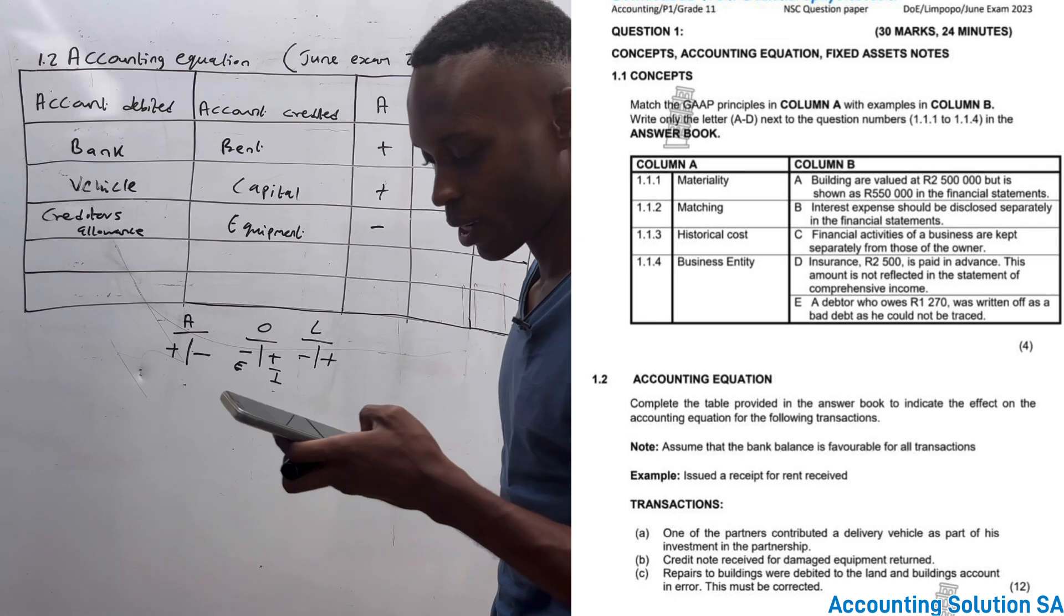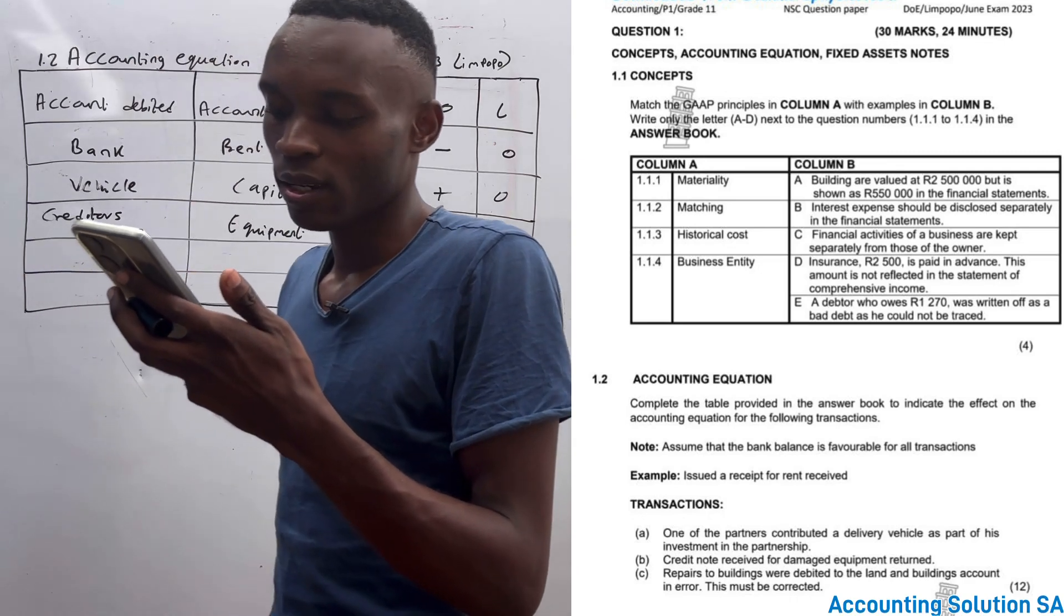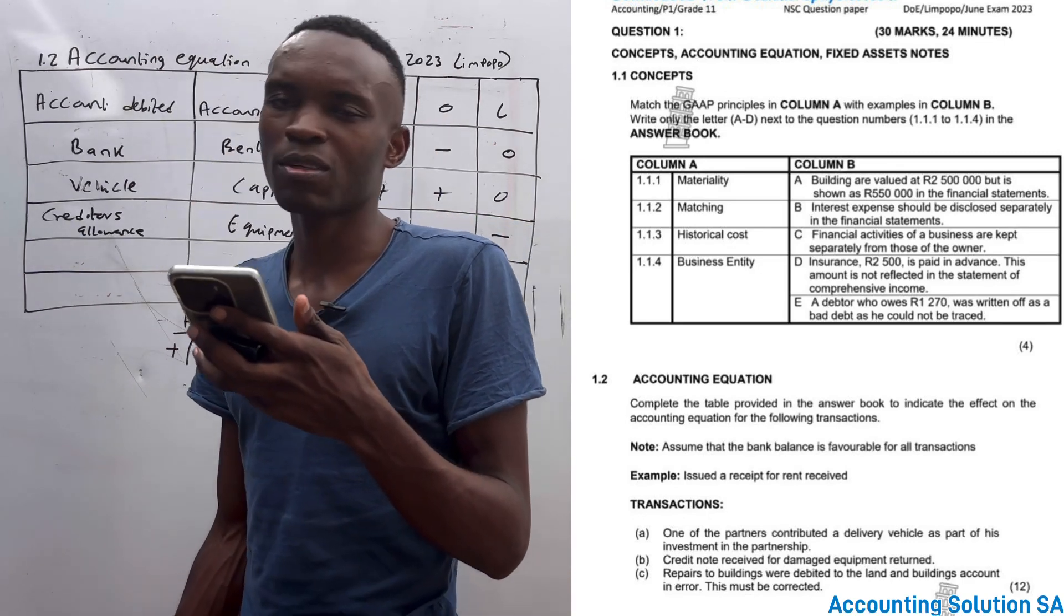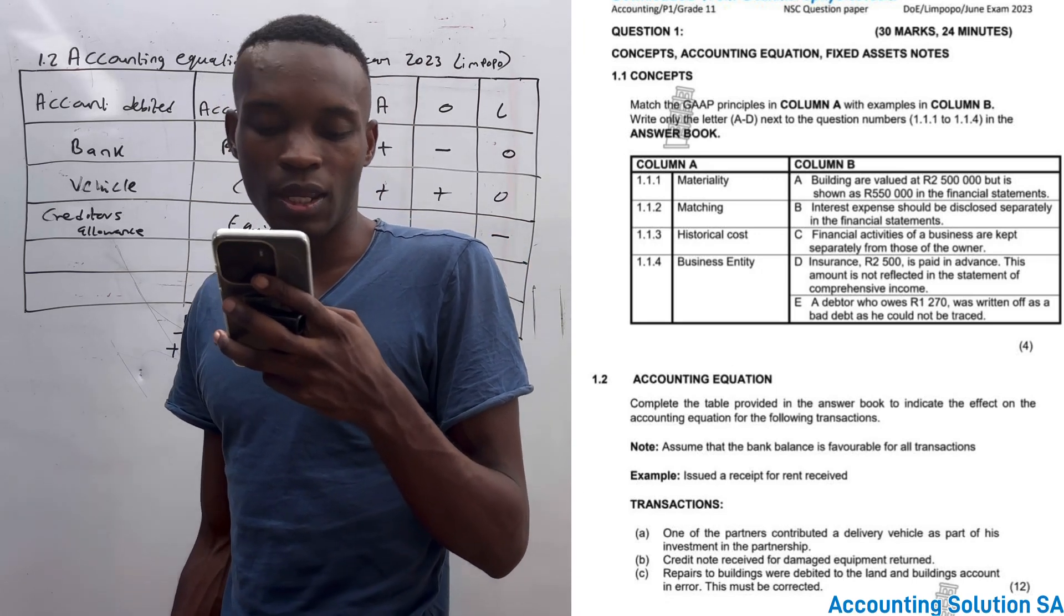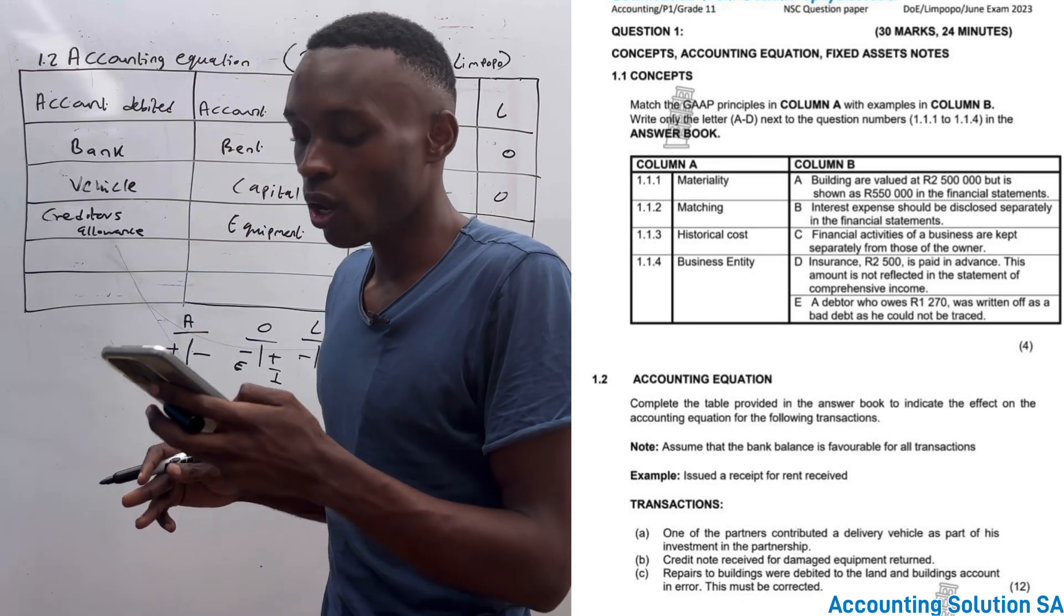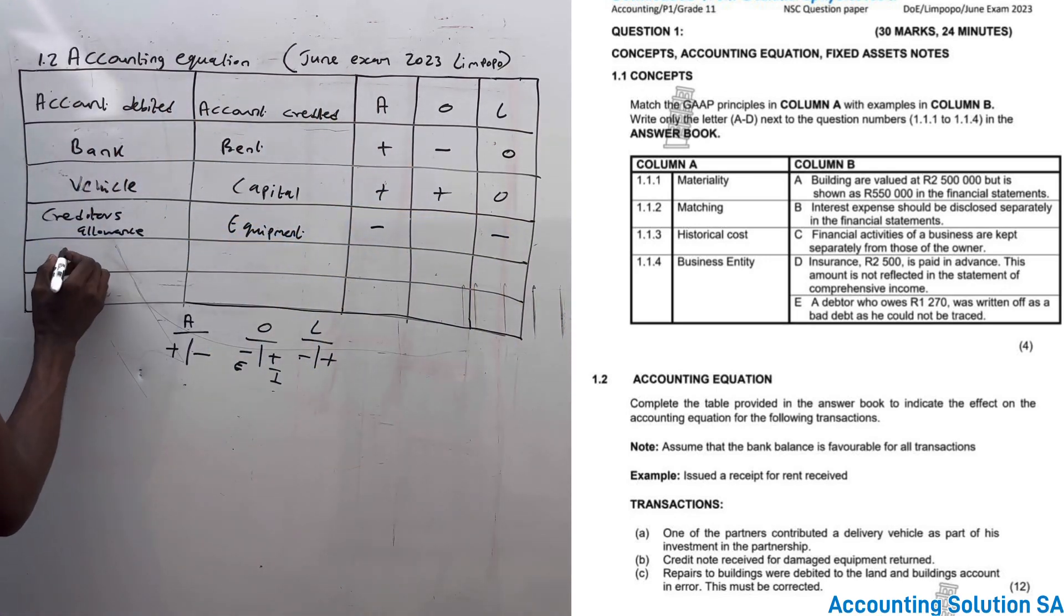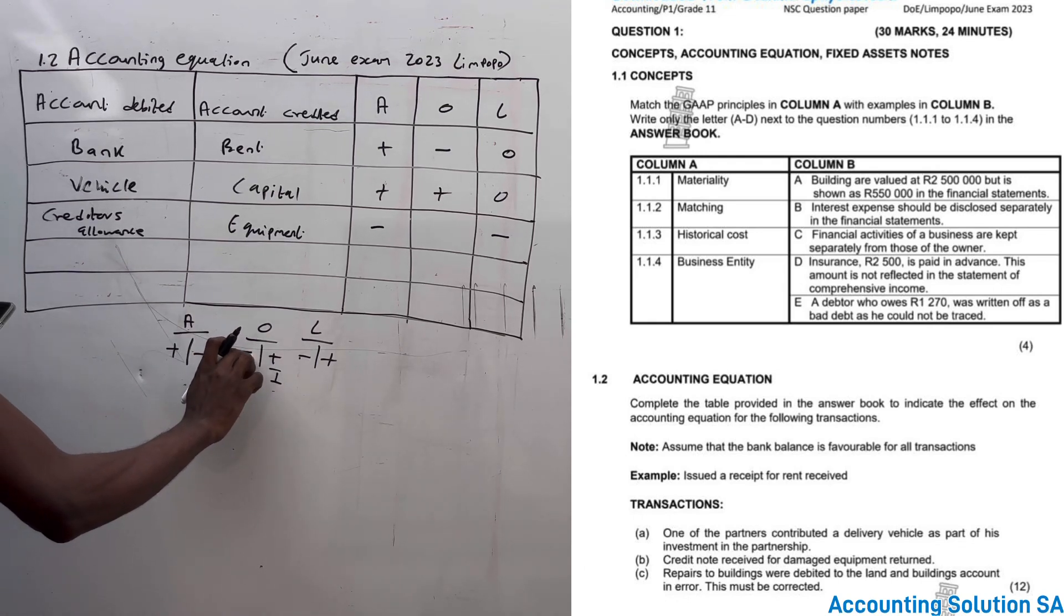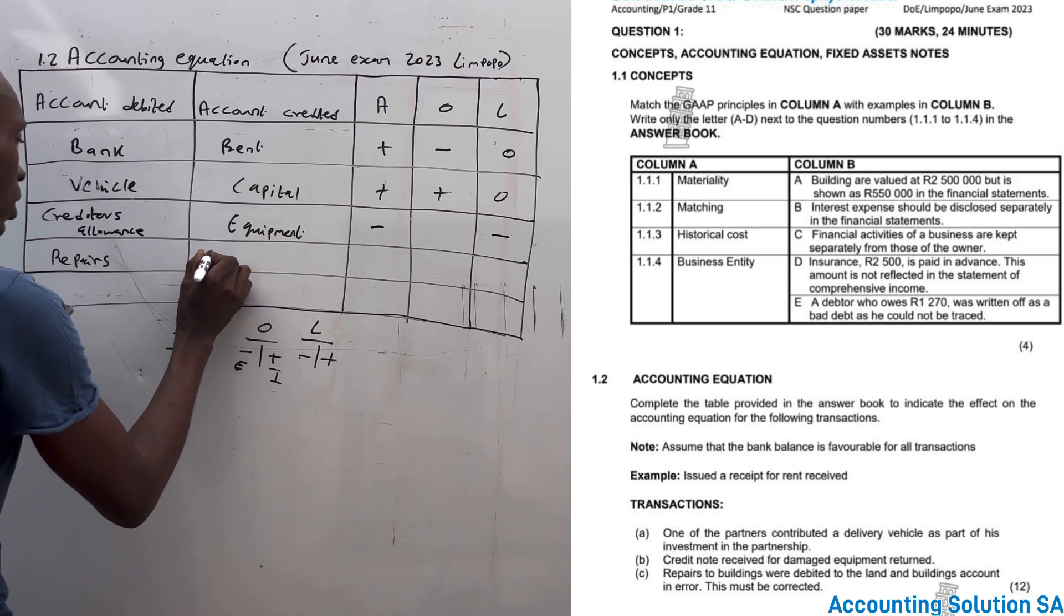Number three: repairs to the building were debited to the land and building account in error. This must be corrected. They made a mistake and said repairs is part of building. Repairs is an expense, so now we have to correct this error. How do we correct it? By subtracting it under assets, which means that we have to record it as an expense as the repairs and subtract it under land and building.